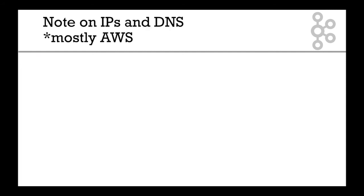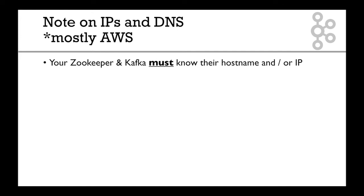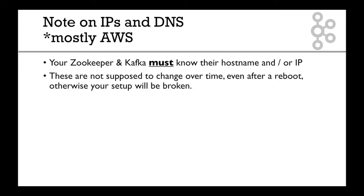I want to make sure you understand something super important about Kafka, mostly on cloud providers. When you set up Kafka and ZooKeeper, these processes must know their hostname or IP in advance, and they're not supposed to change over time — even after reboots — otherwise your setup will be broken. So having a constant hostname or a constant IP is key.